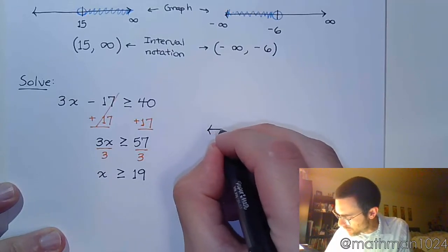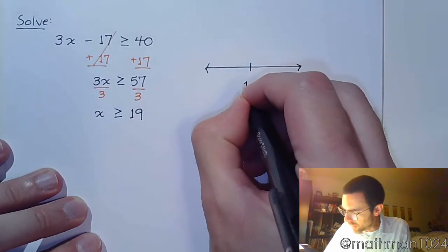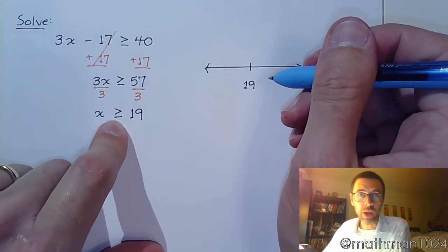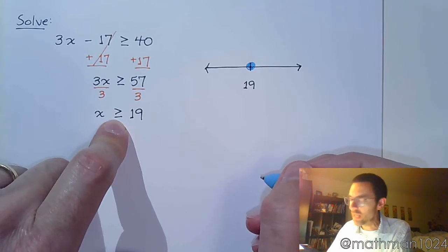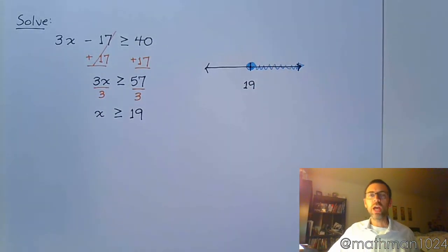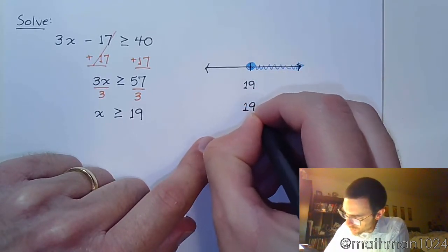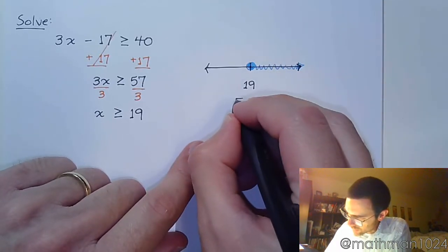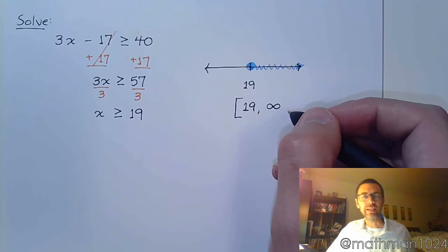And up to the side we can do our number line. The only number that I really care about is 19. And we see that we have the option of being equal to 19, so this is going to be a filled in circle. That shows that I'm including that. And greater than means going out to the right. Then we write this using interval notation. As we go from left to right, we start at 19, we go to the right toward infinity. Since 19 is included, we're going to use a bracket.